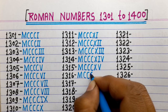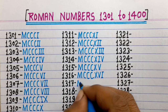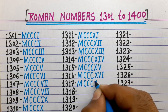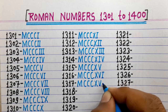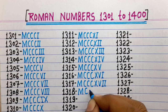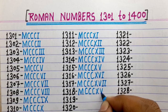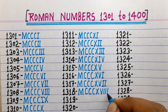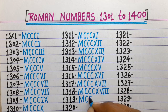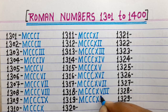1316 is MCCCXVI. 1317 is MCCCXVII. 1319 is MCCCXIX.